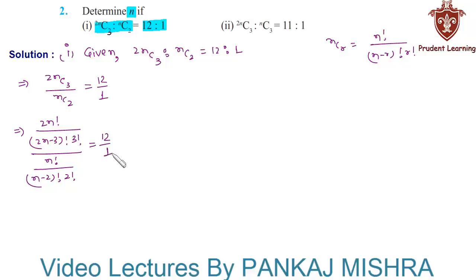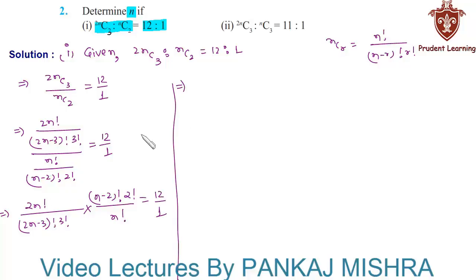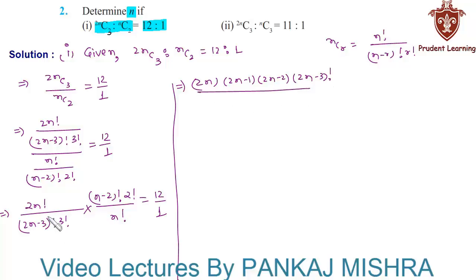This is equal to 12 upon 1. The left hand side can also be written as 2n factorial over (2n minus 3) factorial into 3 factorial, multiplied by (n minus 2) factorial into 2 factorial over n factorial, is equal to 12 upon 1. Now 2n factorial can be written as 2n into (2n minus 1) into (2n minus 2) into (2n minus 3) factorial.